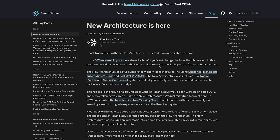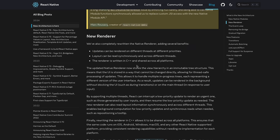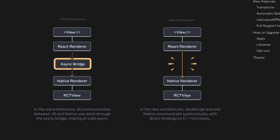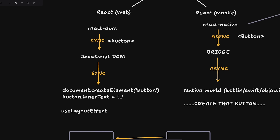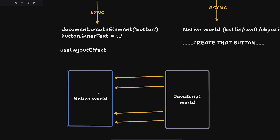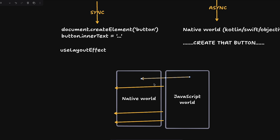In the new architecture, that bridge is gone. Instead of rendering through an async bridge to produce native components, JavaScript can now call native APIs directly. This is achieved through direct bindings — a JavaScript interface that lets you call native functions. Think of it as the two worlds coming very close together without the serialization cost of the old bridge.